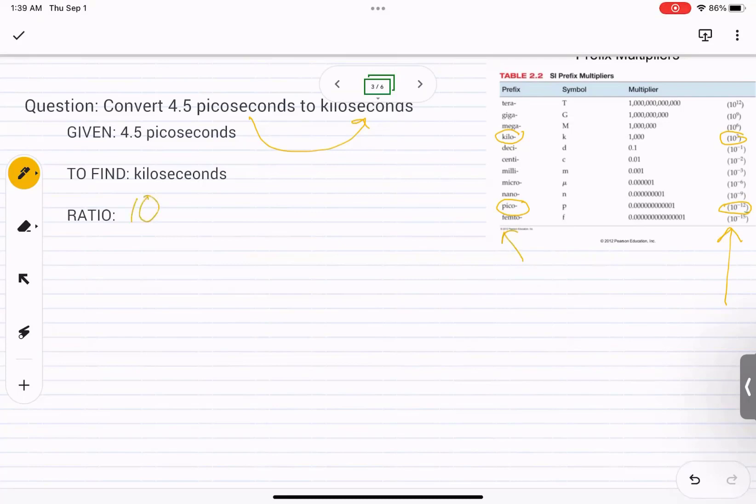If I were to put 10 raised to negative 12 seconds, that's going to equal one picosecond. In the same way, I can put on the other side for the kilo, 10 raised to three seconds is one kilosecond.